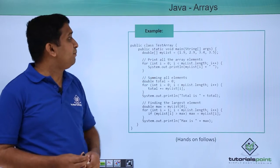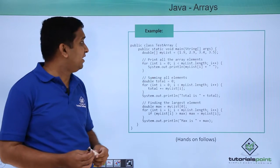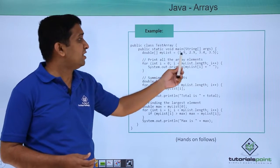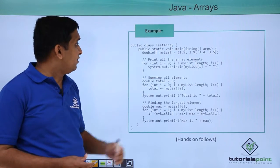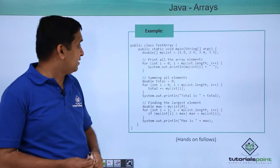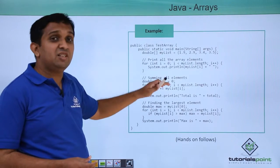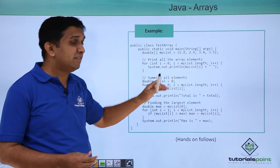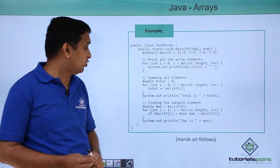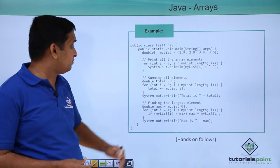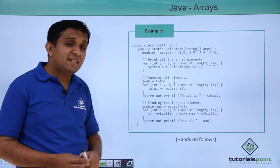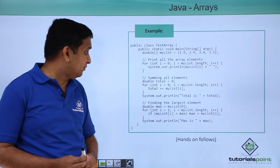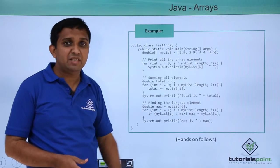One code is written where the myList array is declared of double type. The array is initialized with a few values. First, the array is printed. After that, the total of all the elements is calculated in the next part of the code using a for loop. In the last part of the code, the largest element of the array is printed, which is stored in the max variable.